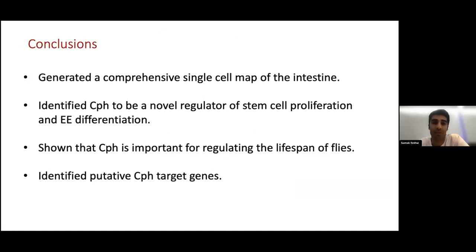We are now validating these target genes using NanodamID, and we will shortly release our whole dataset in a Shiny app. In conclusion, we've generated a comprehensive single-cell map of the intestine and identified CPH as a novel regulator of stem cell proliferation and enteroendocrine cell differentiation. We've shown that CPH is important for regulating the lifespan of flies, and identified some putative targets that we're validating with NanodamID.